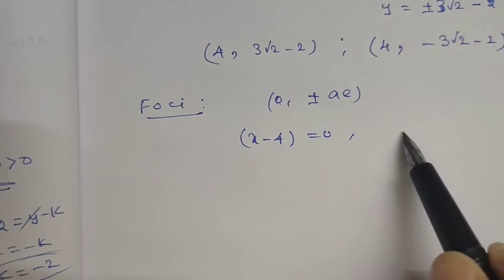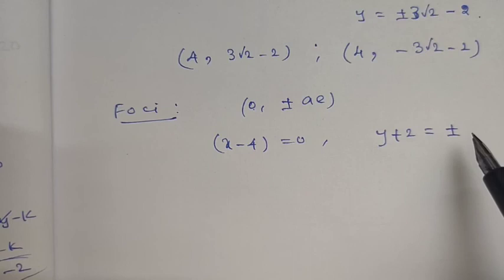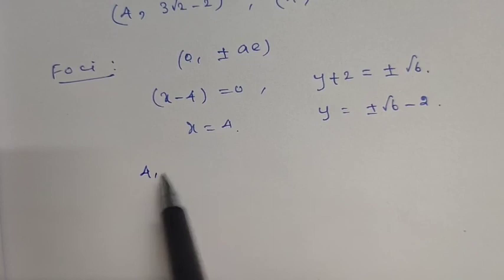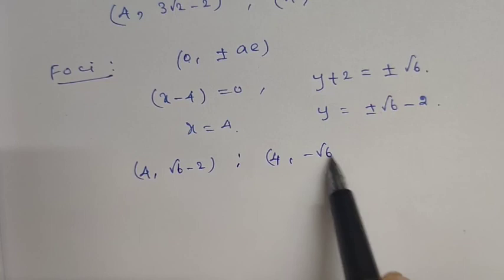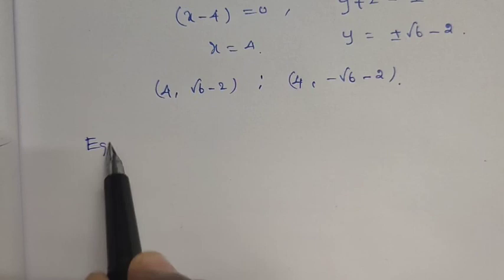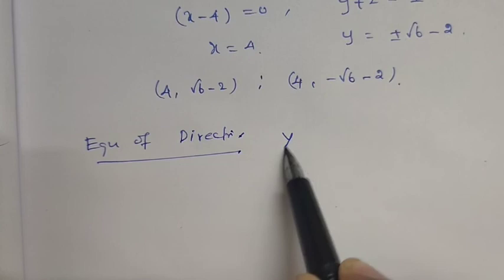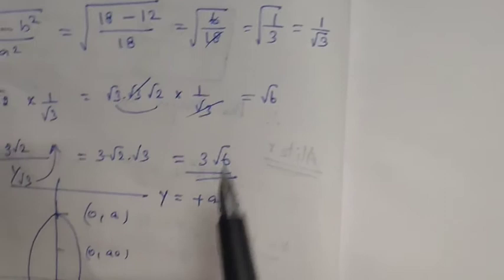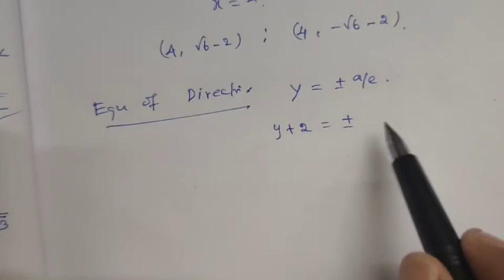For the directrices: y plus 2 equals plus or minus a by e, where a by e equals 3 root 6. So y equals plus or minus 3 root 6 minus 2. This is the final answer. Thank you.